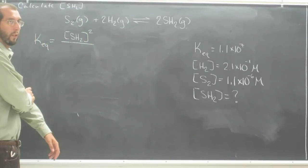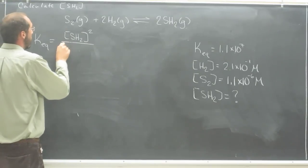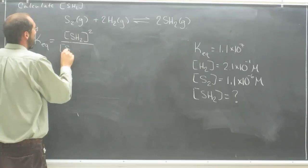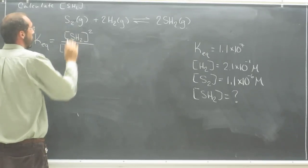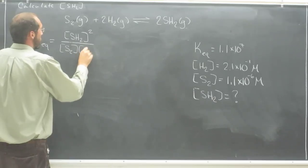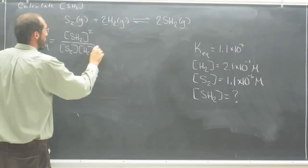So the coefficient equals the superscript. Then you're going to divide that by the reactants, which is the concentration of S2 times the concentration of H2. And again, with the coefficient being 2, you want to square that.